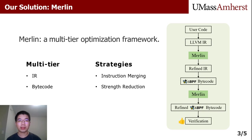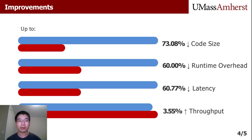At the same time, we follow the principle of verifier design so that Merlin does not break the eBPF verification. The results show that Merlin brings less code size, less runtime overhead, less latency, and more throughput compared with LLVM, which is the most commonly used eBPF compiler.